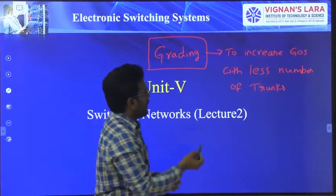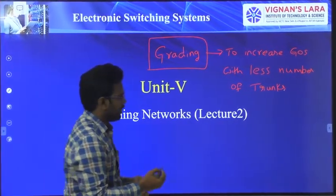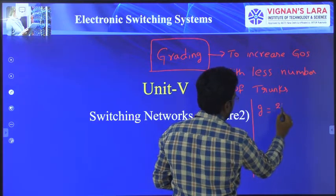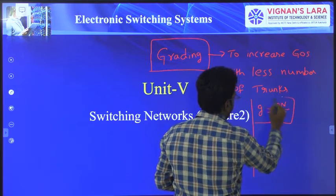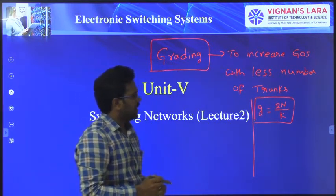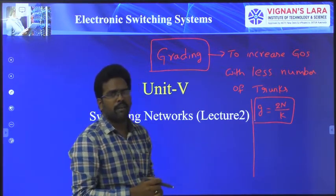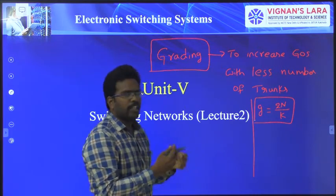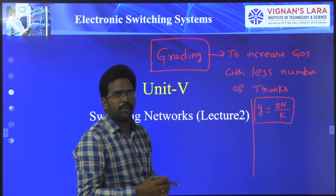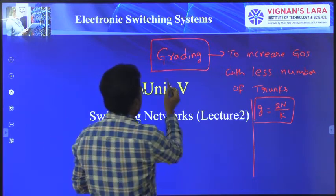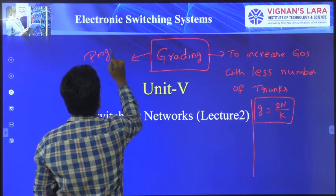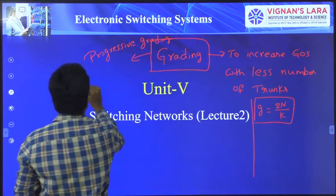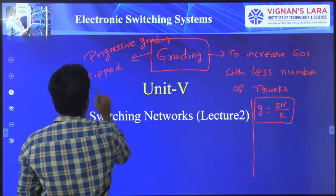We studied in the previous class how to divide outlets into groups. The formula G equals some value where N is the number of trunks and K is the number of available parts. From this we obtained the number of groups, which is generally an even number. You have seen some methods of grading: progressive grading, skipped grading, and homogeneous grading.